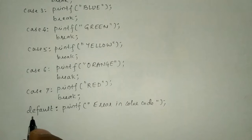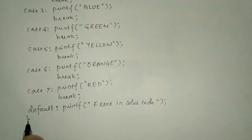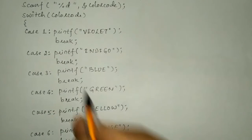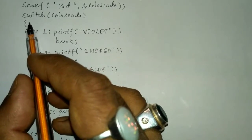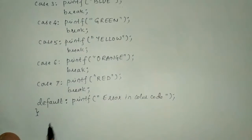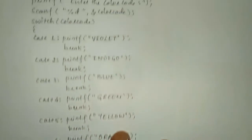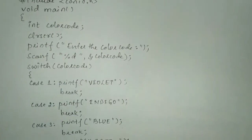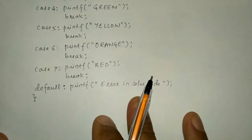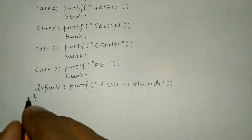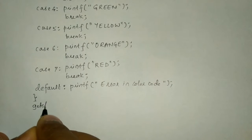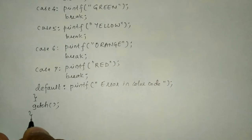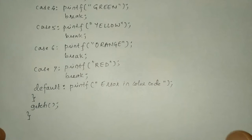Now we are going to close this switch statement. The switch statement opening had a curly brace, so we write the closing brace. The void main function also needs its closing bracket. After writing the getch function, I put the curly closing brace. Now let us execute this program.